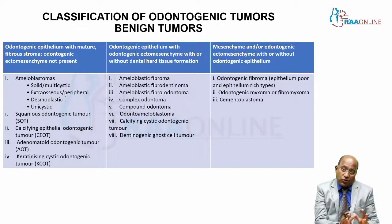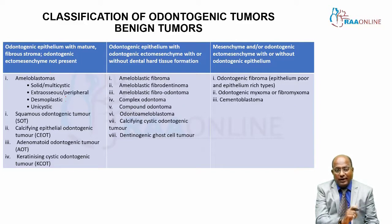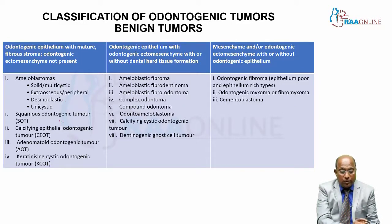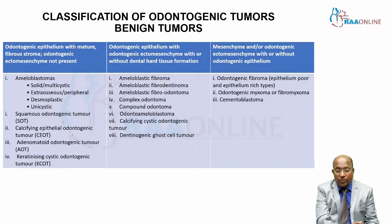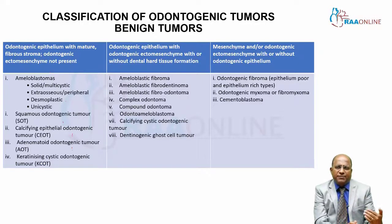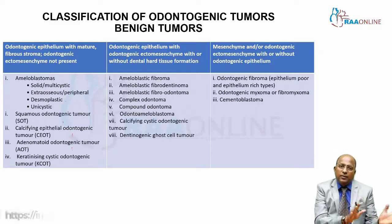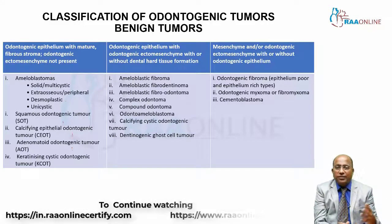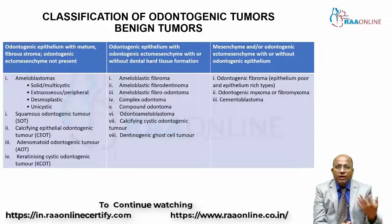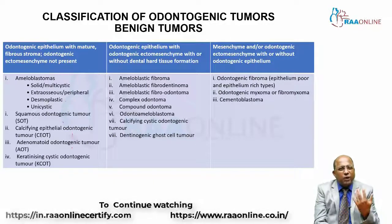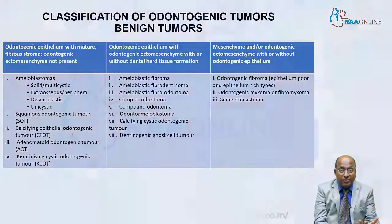In this first category we have ameloblastomas — including the solid multicystic variety, the extraosseous peripheral variety, and the desmoplastic and cystic types. We also have squamous odontogenic tumor, calcifying epithelial odontogenic tumor (CEOT), and adenomatoid odontogenic tumor (AOT). Each has a very specific presentation with signs, symptoms, and diagnosis. Once diagnosed, treatment is easily prescribed — for example, AOT almost exclusively occurs in the anterior maxilla.